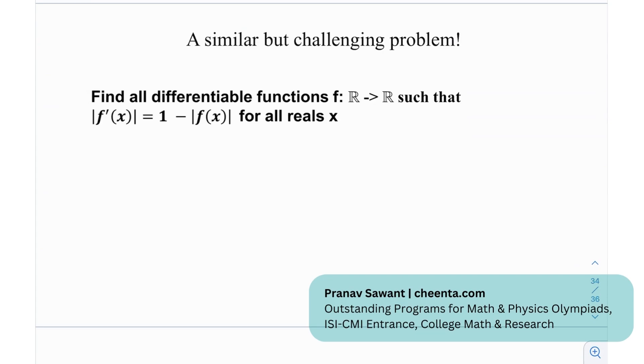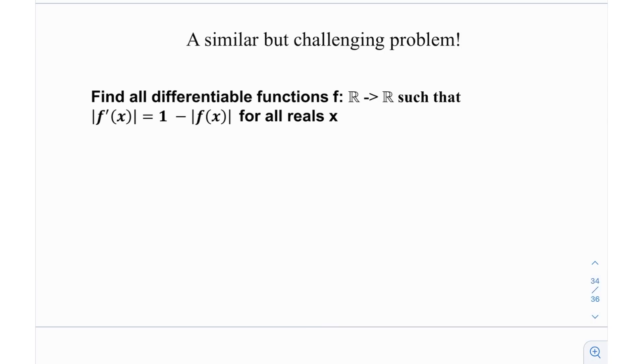Okay so we have a similar challenging problem. And this is involving the modulus function. Find all differentiable functions f mapping from reals to reals such that it satisfies this given differential equation: |f'(x)| = 1 - |f(x)|. So maybe give it a try. And if you're able to solve it or make any progress on it, let me know in the comments section below. And until then I'll see you in the next video. Thank you very much and bye-bye.